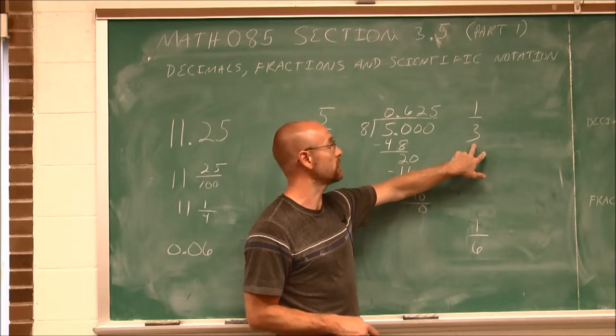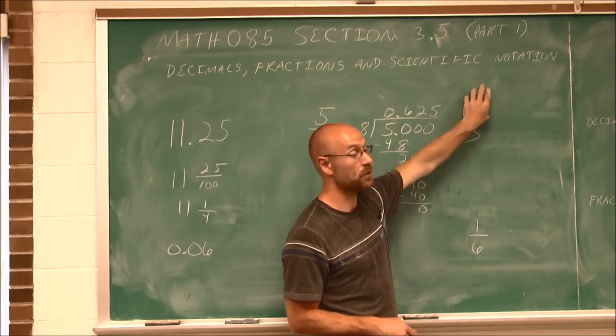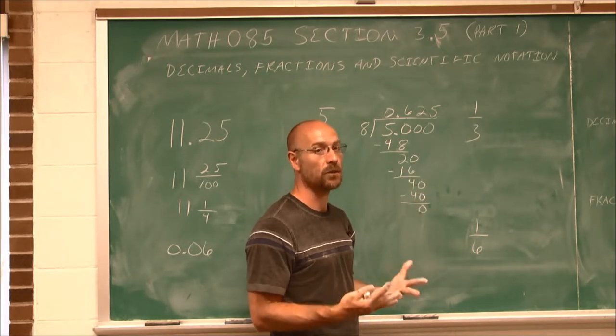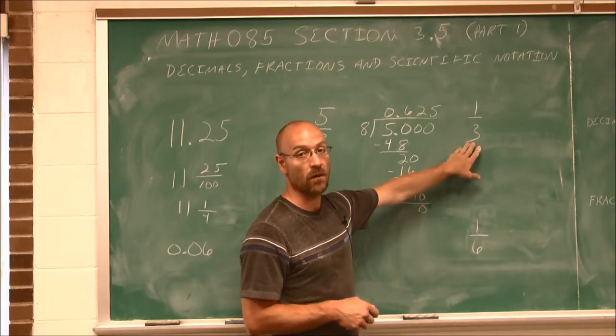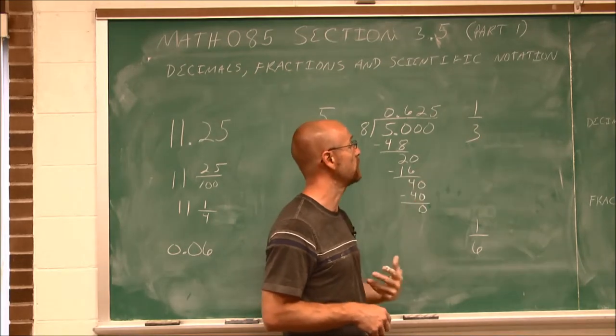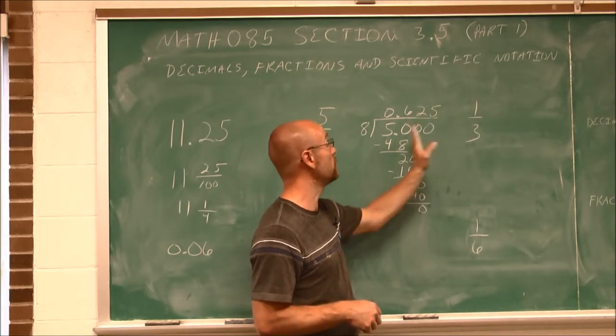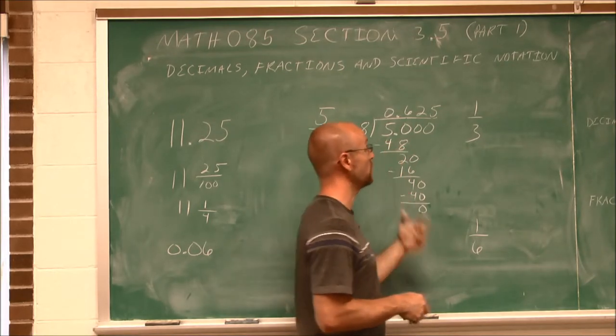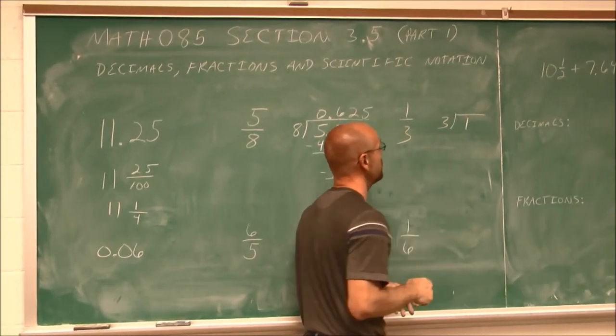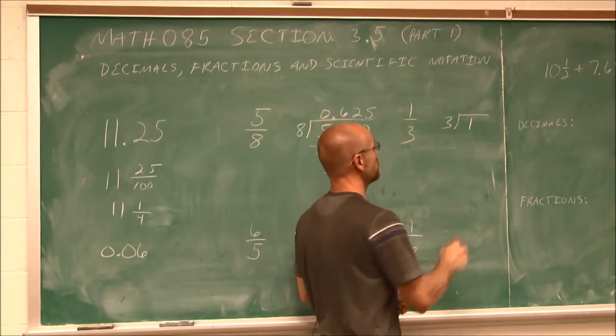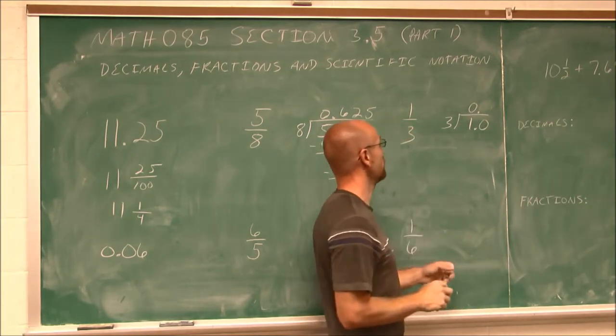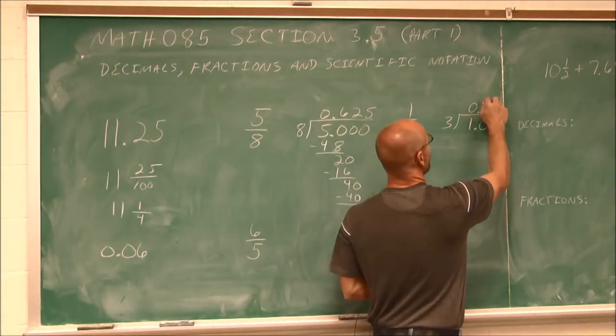Sometimes we'll come across fractions like this. Now a fraction is an integer over an integer. But when we convert it to a decimal, sometimes it's a non-terminating decimal. It's something that we call a repeating decimal if the same value is repeated over and over if we continue out the division. To convert this to a decimal, we do the division. I have 3 as my divisor and 1 as my dividend.